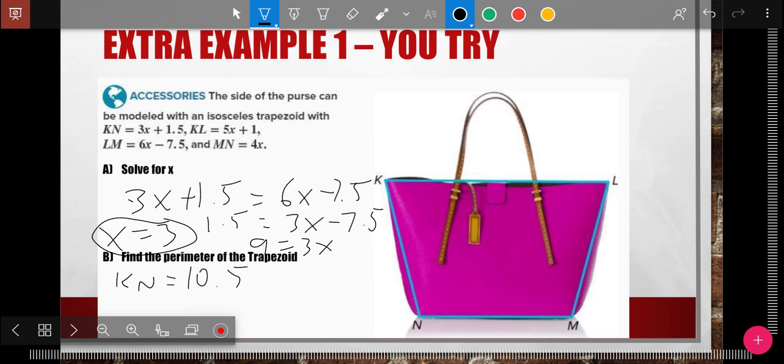All right. Again, I plug it back in. So KN would be 3 times 3, which is 9, plus 1.5 is 10.5. And whatever KN is, LM is. I then plugged into KL. 5 times 3 is 15, plus 1 is 16. And last but not least, I plugged into MN. 4 times 3 is 12. I added all of those up and got my answer for the perimeter of 49.